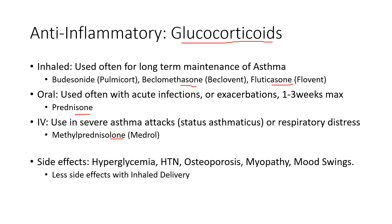Side effects: hyperglycemia — glucocorticoids act on our cortisol receptors, the same effects as cortisone in the body, so it's going to spike glucose. You might see hypertension from changes in blood volume as well as the hyperglycemia. Osteoporosis — remembering that cortisone is catabolic, so it's going to break things down. It may break down bone with long-term use.